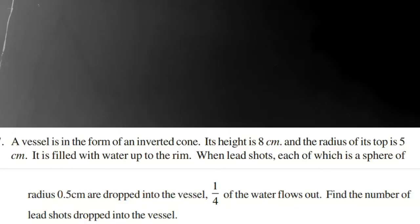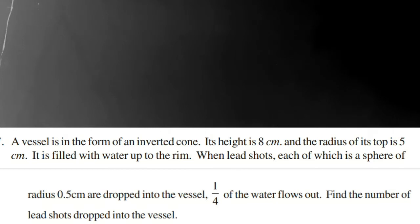In this video we are going to learn mensuration exercise number 4, question number 7. A vessel is in the form of an inverted cone. Its height is 8 centimeters and the radius is 5 centimeters. It is completely filled with water. Lead shots, each of radius 0.5 centimeters, are dropped into the vessel, and one-fourth of the water flows out. Find the number of lead shots dropped into the vessel.